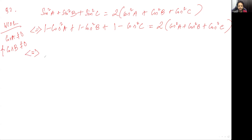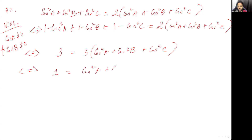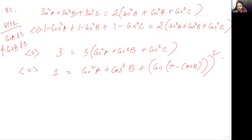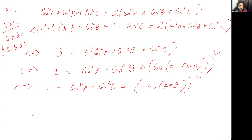Setting that equal to 2(cos²A + cos²B + cos²C), we get 3 = 3(cos²A + cos²B + cos²C), which simplifies to cos²A + cos²B + cos²C = 1. Since A + B + C = π, I'll replace C with π - (A + B), so the equation becomes cos²A + cos²B + cos²(A + B) = 1.